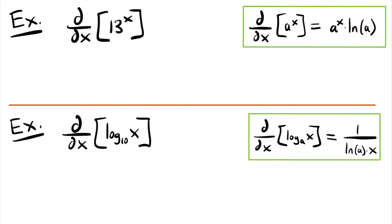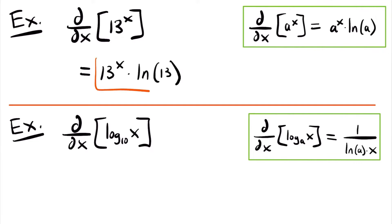If we use that rule in this scenario where a is equal to 13, then we have that the derivative is equal to 13 to the power of x times the natural log of 13. That will be the derivative of this function.